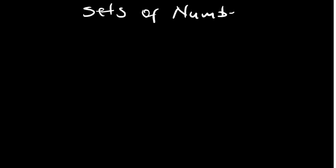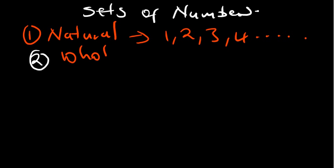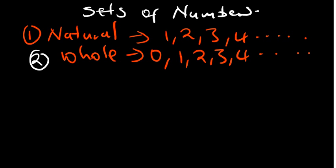The simplest set of numbers is the set of natural numbers. Natural numbers are counting numbers where we start from one: 1, 2, 3, 4, and so on — never ending. The slightly bigger set is the set of whole numbers, which is almost the same except it includes zero, so it starts from zero going up. Both natural and whole numbers do not include fractions or decimals.